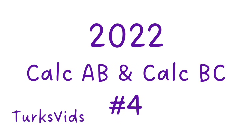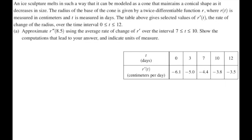In this video, we're doing number 4 from the 2022 Calc AB and BC exams — a table problem. An ice sculpture melts as a cone that maintains its conical shape. The radius r of t is measured in centimeters, t in days. The table gives selected values of r prime of t over 0 to 12. For part A, approximate r double prime of 8.5 using the average rate of change of r prime over the interval from 7 to 10 — show the computations and indicate units.